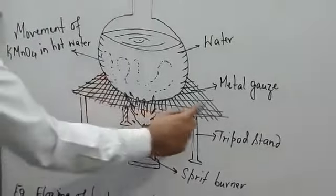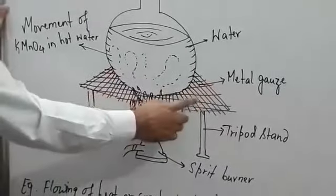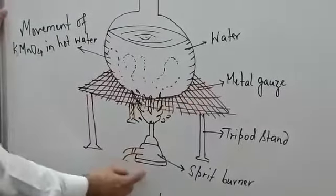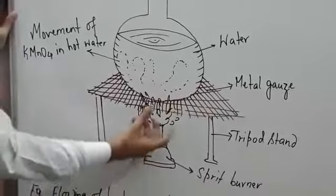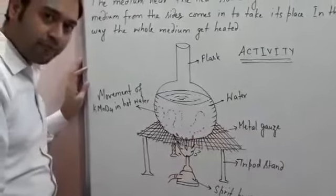We keep it on a metal gauze surface, which is a sieving-like structure, and place it on a spirit burner to release heat.